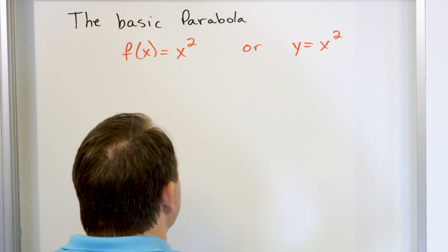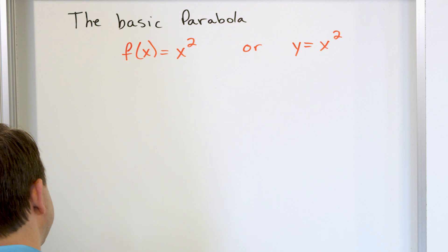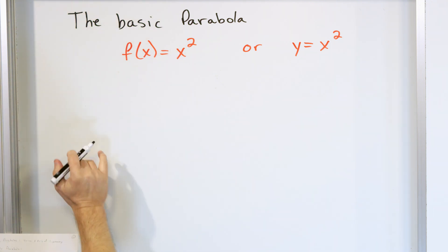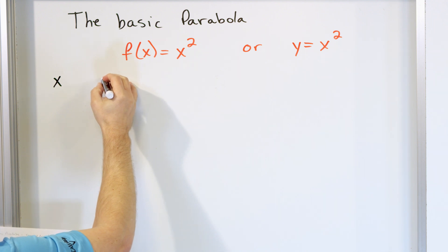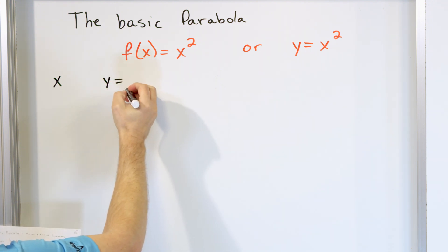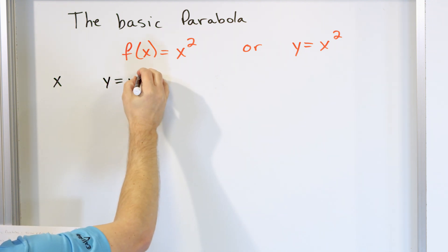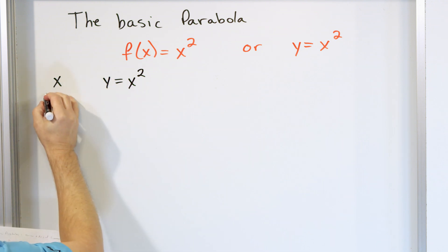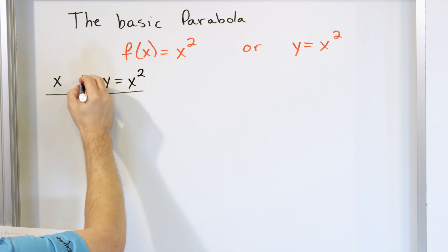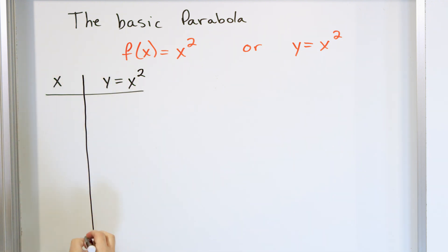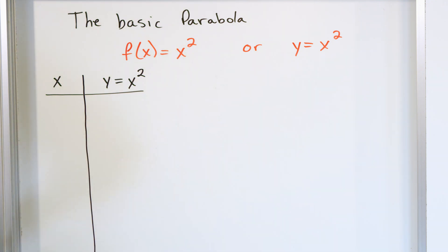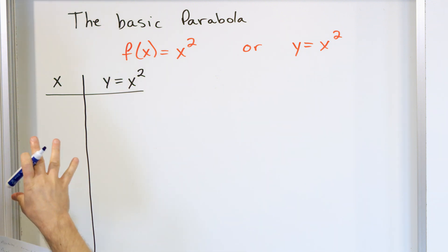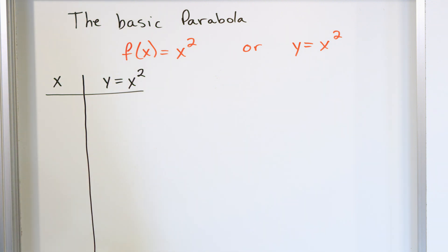We're not going to do this for every single problem, but for this one, because the basic parabola is so important, I want to write down a few points. We have x as an input, and I'm going to use the y notation: y is equal to x squared. So we'll just make a quick little table. I know we've done this before, but I want to do it here so we can graph it and play around with it to burn the image of the basic parabola in our mind.